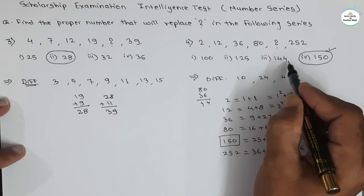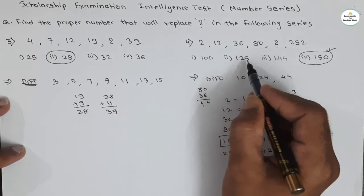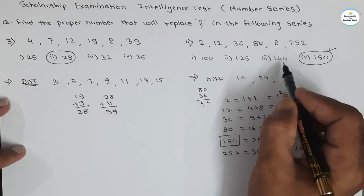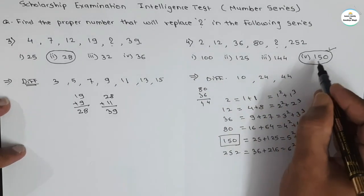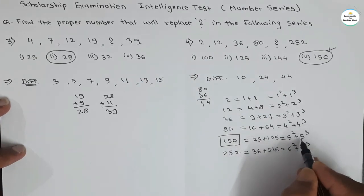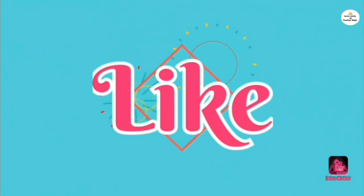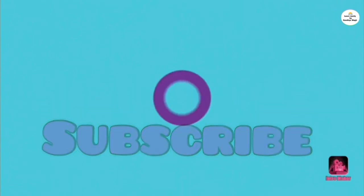Note that 124, 125, and 100 might seem like they could be answers since they relate to perfect squares, but they are not correct. The correct answer is 150, which is the addition of 5 squared and 5 cubed. This is all for this video. We will meet again in our next video. Do learn. Do enjoy. Thank you.